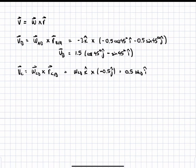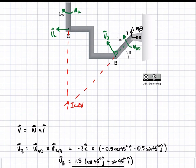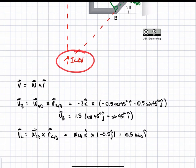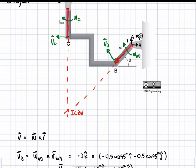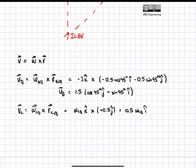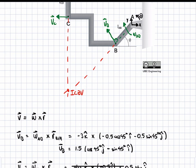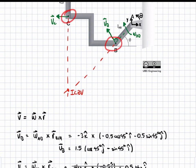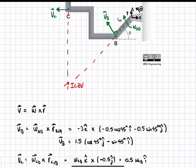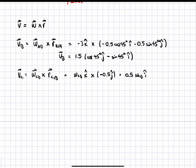Now we move on to the middle body BC. We need to apply V equals omega cross R with respect to the ICZV, just as we did for the arm equations where R of B with respect to A was the radius from the pin joint to point B, and from the pin joint to point C. For link BC, we need to account for the ICZV location. We have two unknowns, so we'll analyze both points B and C.